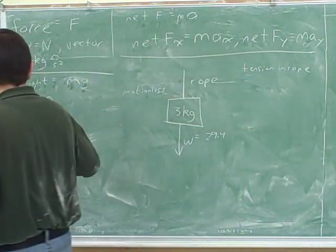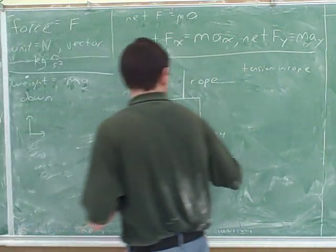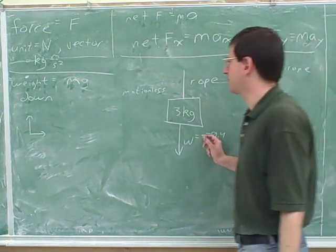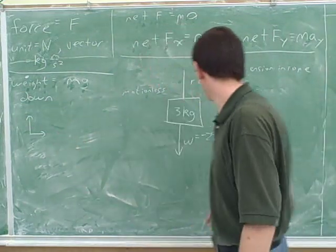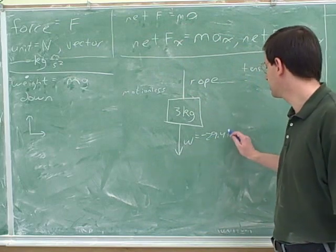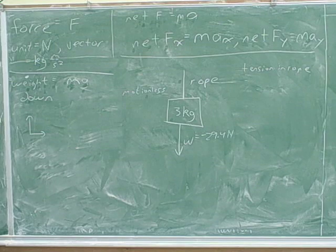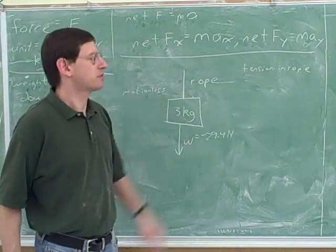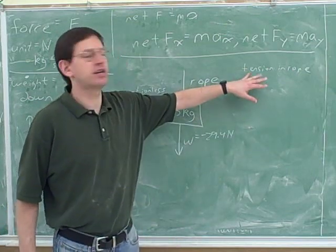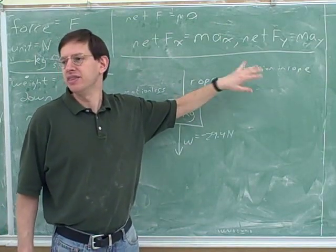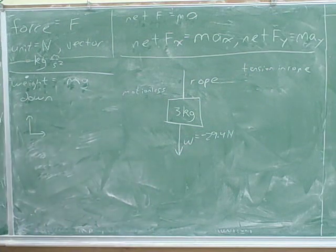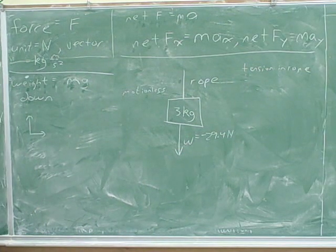If we choose these positive directions, then this would be negative. The sign here doesn't come from the formula — it just comes from our common sense. The units on the weight are Newtons. Tension is a force also. The force that a rope exerts is basically its tension. Tension is the name for the rope force, just like the weight is the name for the gravitational force.